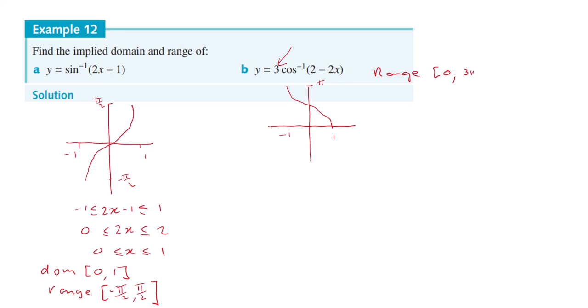Now what will the domain be? Remember this was the unshifted cos⁻¹ graph. What we know is again that for cos⁻¹ it's got to be between -1 and 1. So 2 - 2x has to be greater than or equal to -1 and less than or equal to positive 1.